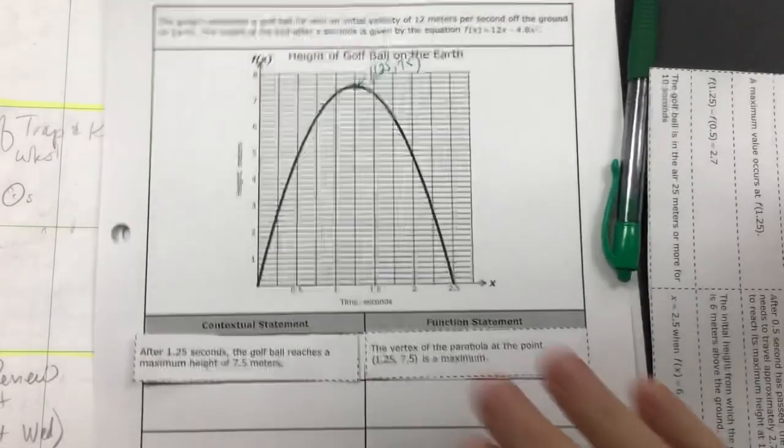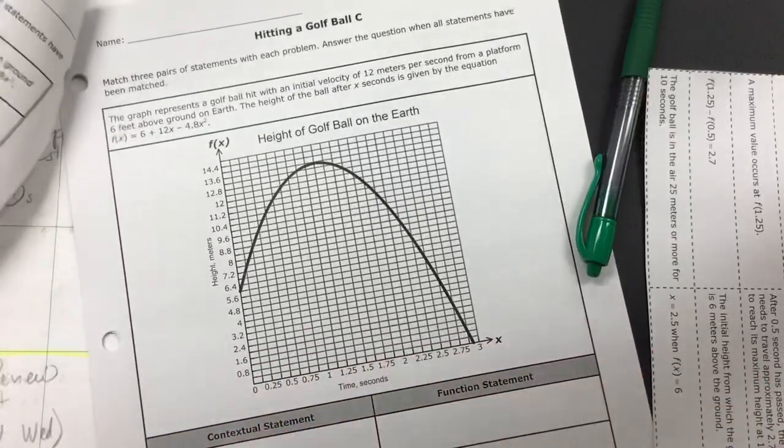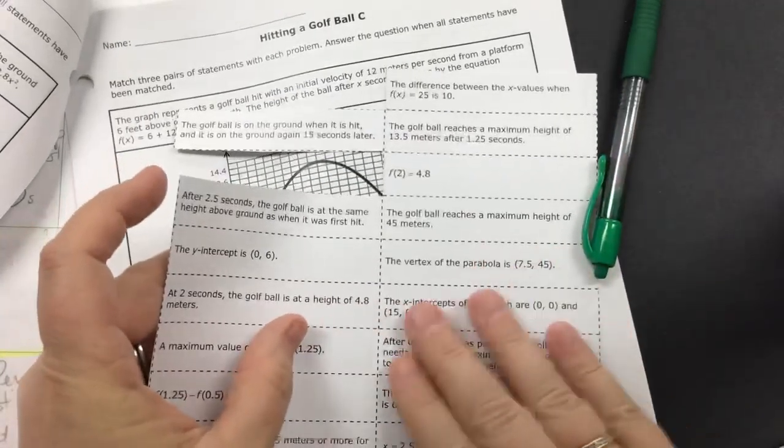So again, what you're going to do is finish golf ball A, B and C, and you're going to end up using up all these boxes.